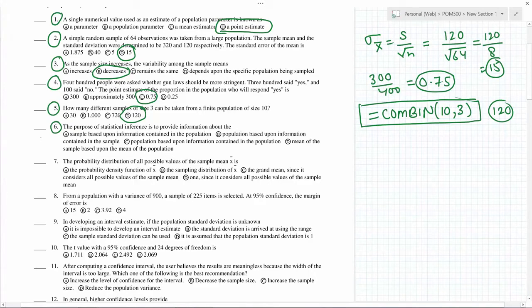The purpose of statistical inference is to provide information about the population based on the sample. We are not interested finally in the sample, but the population, based upon information contained in the sample. So this looks appropriate.